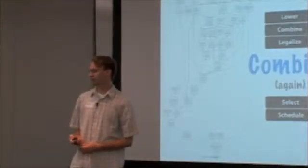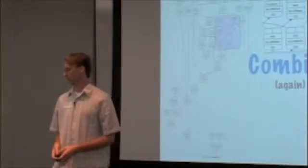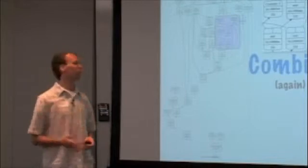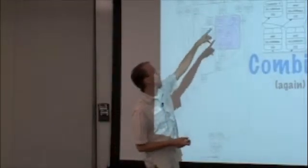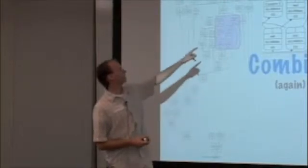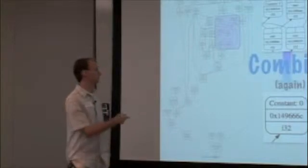After legalization, we actually run the combined phase again because there's often more opportunities for optimization. One of the things that happened here, we were multiplying, our 64-bit multiply was being multiplied by the constant 101. That means that the high part of the multiply ended up multiplying by 0. That's obviously something we can simplify.